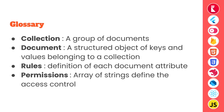Rules are the definitions for the attributes of a document. Each and every attribute is validated by a rule, and this is similar to a table column in a relational database. Finally, AppWrite database also has permissions for each of its resources — permissions are just an array of strings that define how or who can access the documents and collections.